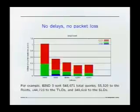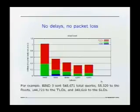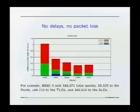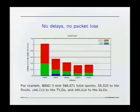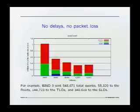Here are a few results. This graph shows the total number of queries sent by each tested configuration — each version of the software — for the case of no delays and no packet loss. The blue represents queries sent to the roots, green is queries sent to the top-level domains, and red is queries to the second-level domain name servers. BIND 8 has the most queries with just over 1 million total for this 12-hour period. Notably, BIND 9 sends quite a bit more queries to the roots than any of the others, although djbDNS is similar.